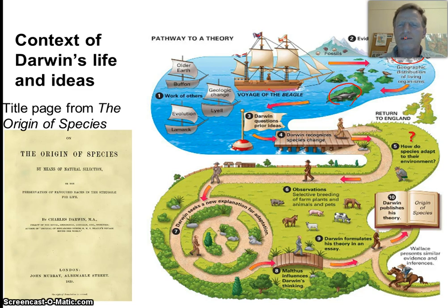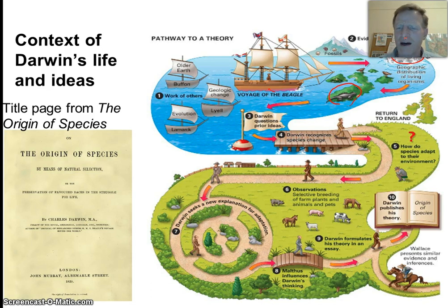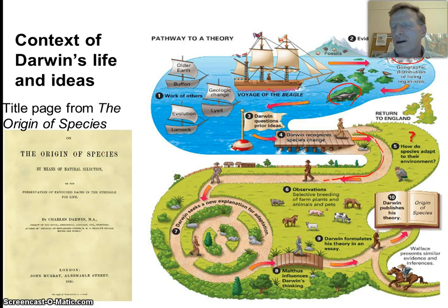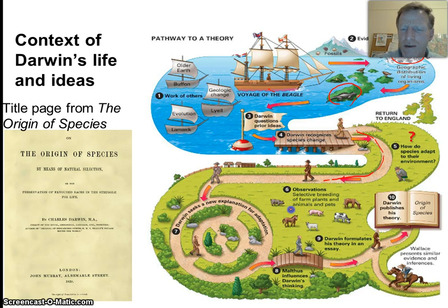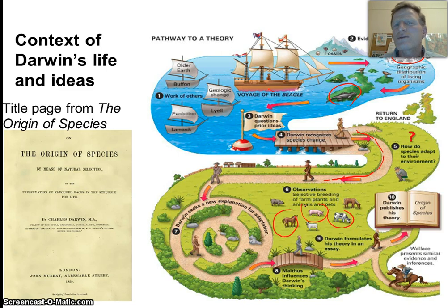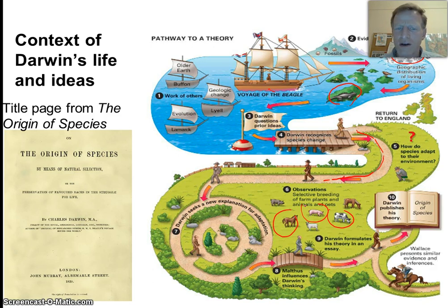Through his travels, he came up with this idea that species must change over time. Then he made a lot more observations. He was a pigeon breeder and found that he could select for certain traits in those pigeons. He saw that what we've done with horses and cows and sheep is that we've actually been able to change these species through artificial selection.